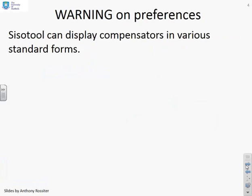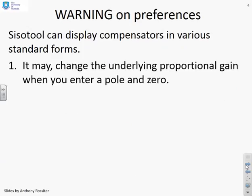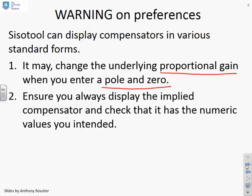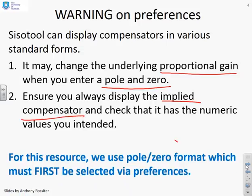Warning on preferences: SISOTOOL can display compensators in various standard forms and you need to decide which form works for you. That will depend upon which lecture you've got and what design method you're using. It may change the underlying proportional gain when you enter a pole or zero. You add a pole and it changes your proportional gain; you add a zero and it changes your proportional gain. You need to be aware of this and override it when necessary. Ensure you always display the implied compensator and check that it has the values you intended.